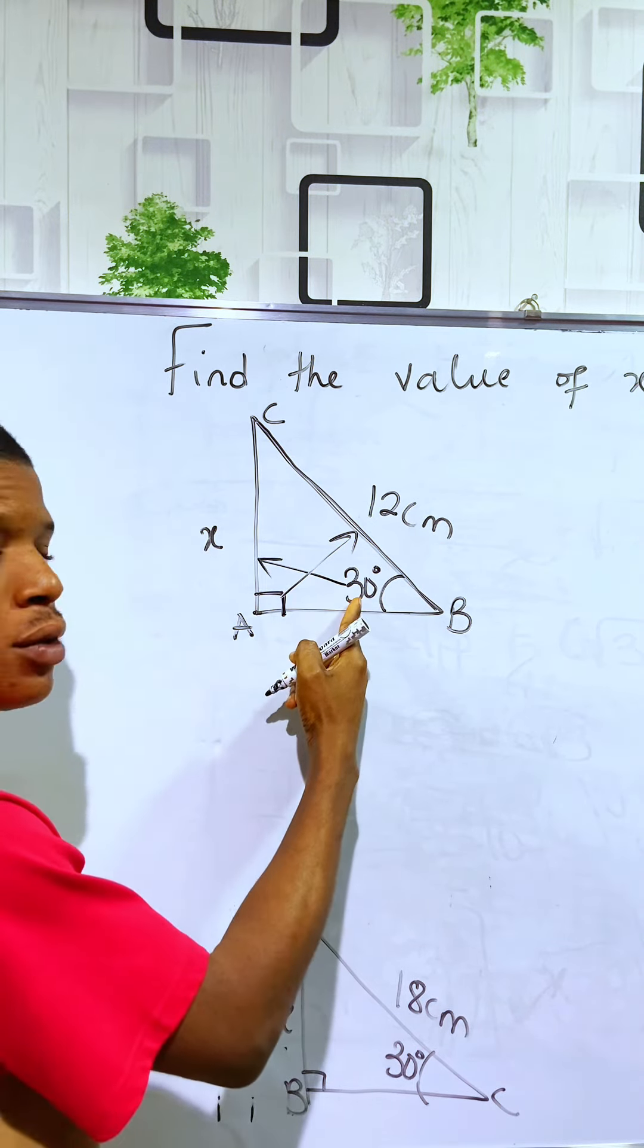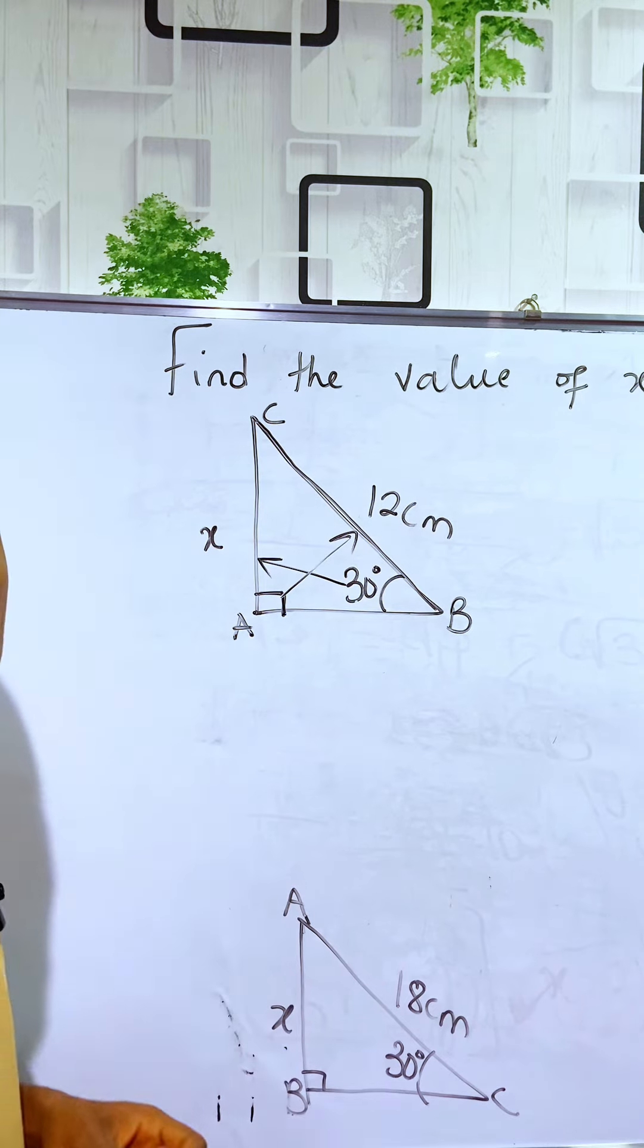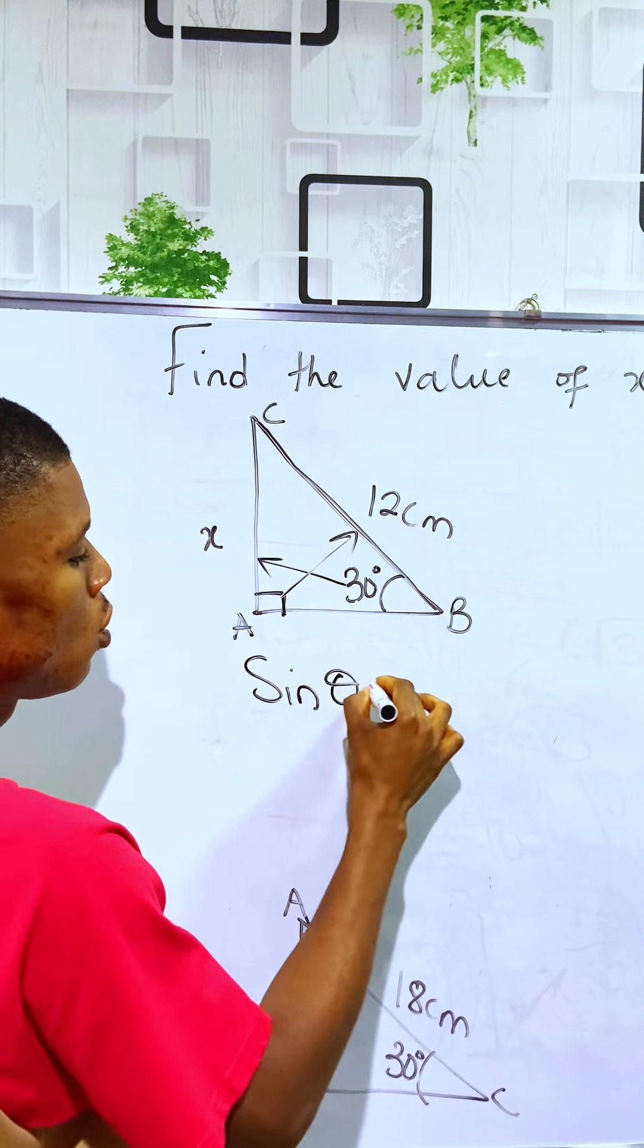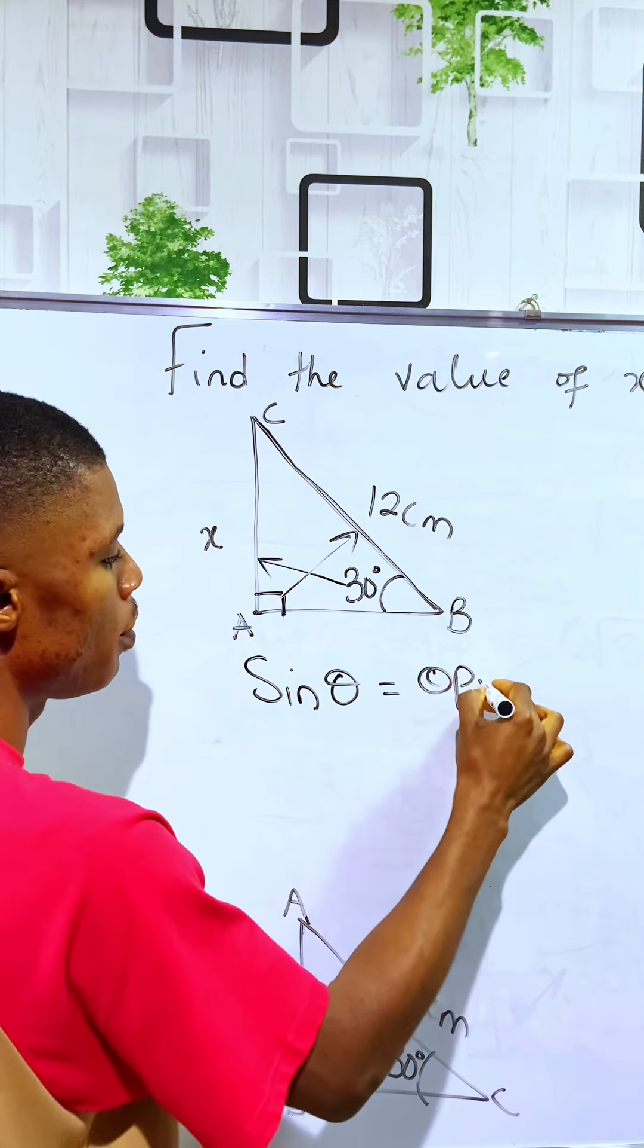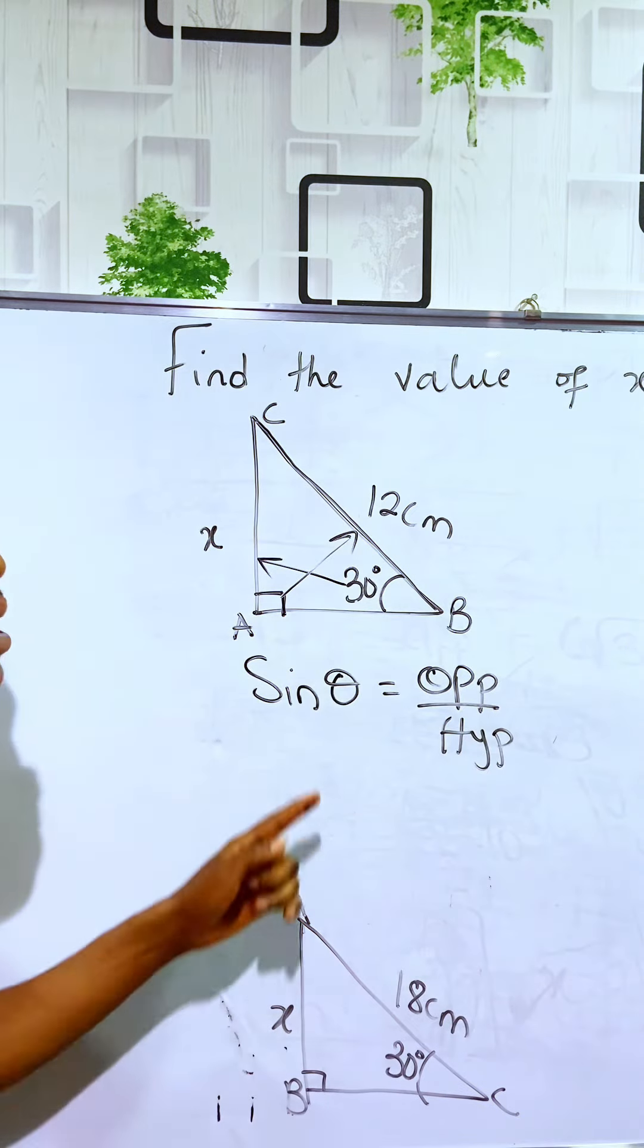Here we are provided an angle, an opposite side, and the hypotenuse. From the trigonometric ratios, sin θ is the only ratio that provides the ratio of opposite and hypotenuse. You can see that it's 30 degrees.